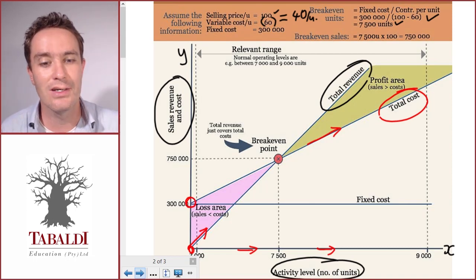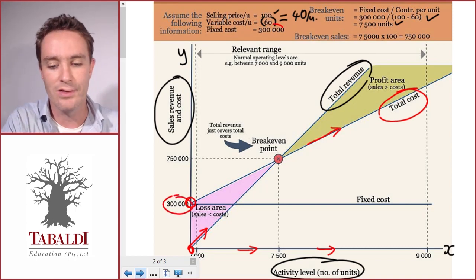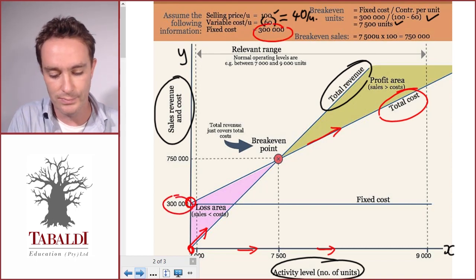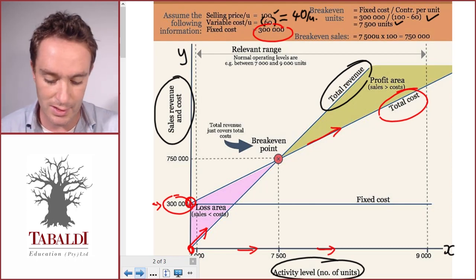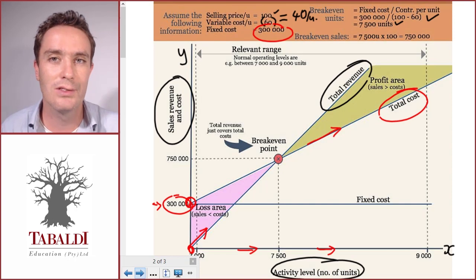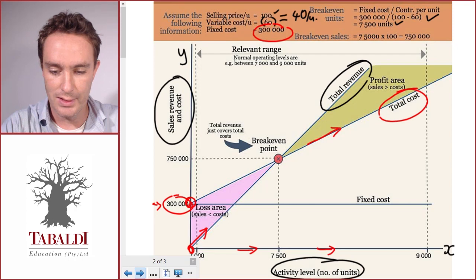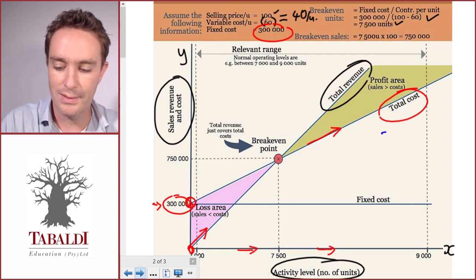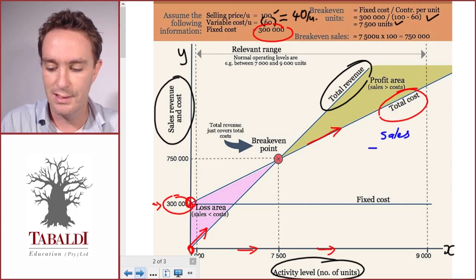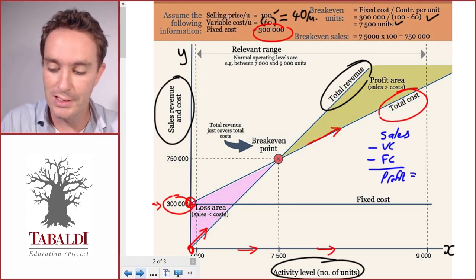It intercepts the y-axis at 300,000, not at zero, so there's some fixed component as well. That's the fixed cost component. If we don't produce any units, x is zero, we still spend 300,000. Now the break-even point: think of the income statement. We've got sales less variable costs less fixed costs equals profit.